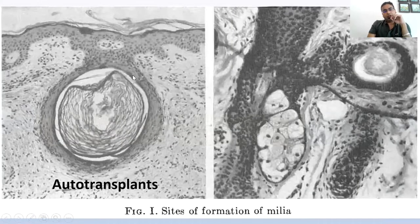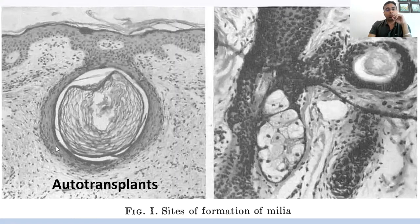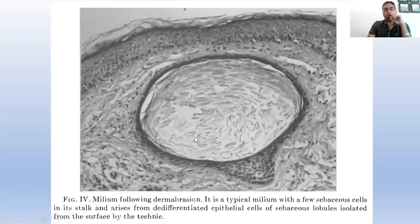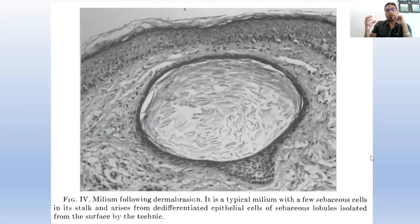Some milia are derived directly from the epidermis, proved by auto-transplant experiments. Acral milia, caused by needle pricks, can derive from the epidermis folding upon itself and forming a small cyst. Then you have milia derived from the sebaceous duct, particularly prominent in milia following dermabrasion. If the dermabrasion is deep enough and cuts off the sebaceous duct from attachment to the hair follicle, the sebaceous duct cannot empty itself into the hair follicle nor reach the epidermis, so it closes upon itself forming a small milial cyst.